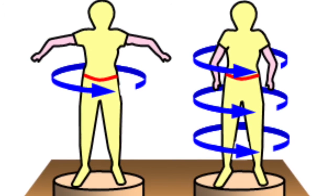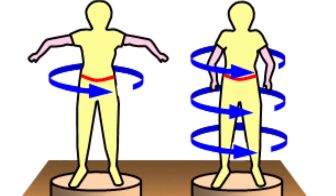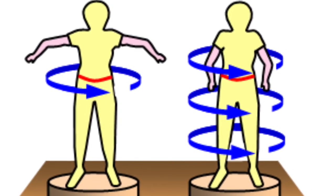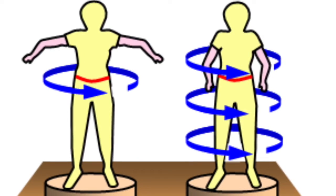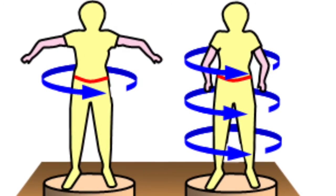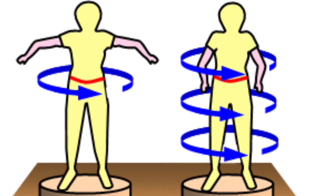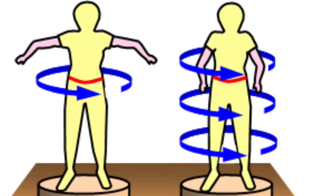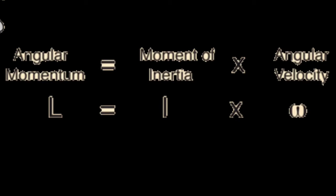Angular momentum is simply an object's potential for rotation. Moment of inertia is the object's resistance to rotation, and angular velocity is how fast an object rotates. Angular momentum is equal to the moment of inertia times the angular velocity.